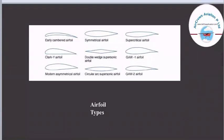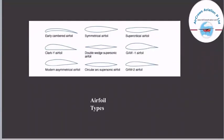There are different types of airfoil. The picture shows: early cambered airfoil, symmetrical airfoil, supercritical airfoil, Clark-Y airfoil, double wedge supersonic airfoil, GAW-1 airfoil, modern asymmetrical airfoil, circular arc supersonic airfoil, and GAW-2 airfoil. Depending upon the aircraft function, airfoils are designed accordingly. If an aircraft has to be supersonic or hypersonic, then the airfoil shape used is the double wedge supersonic or the sweepback type.